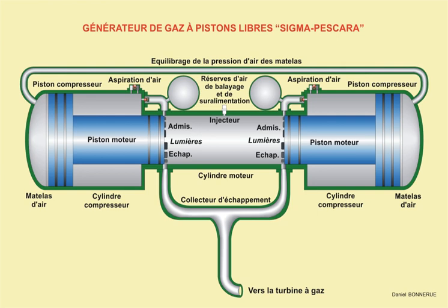Axial compressors are used in medium to large thrust gas turbine engines, because the alternative centrifugal units would be too heavy and too large in cross-sectional area. At smaller sizes, the axial blading at the rear of the compressor loses its robustness and is difficult to manufacture accurately. Consequently, manufacturers tend to replace the rear stages with a centrifugal unit. The compression system is then said to be axial centrifugal.